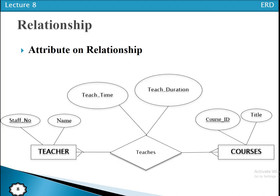Let's take another example in Chen notation: teachers teach courses. Teachers have attributes such as staff number and name; courses have course ID and title. Now 'teach times' and 'teach durations' are attributes that we may not be able to associate with either the teacher or the course entity type alone.